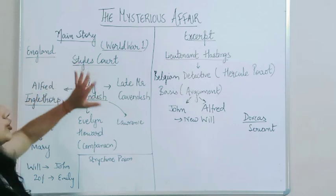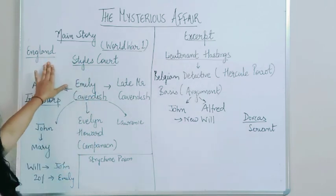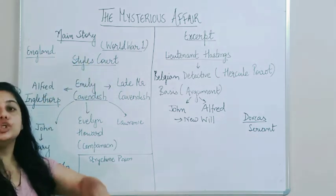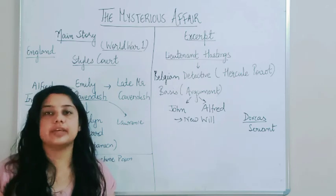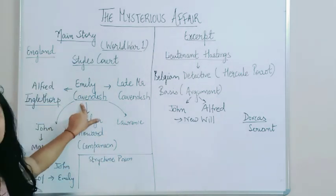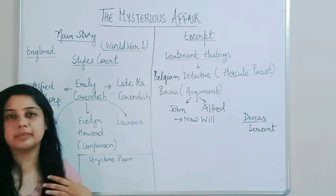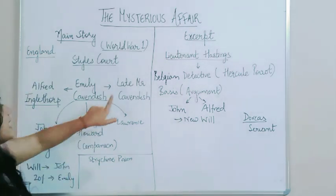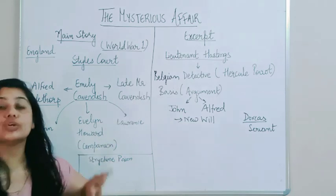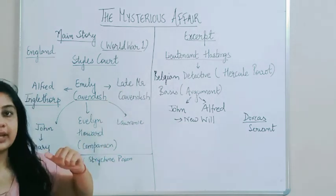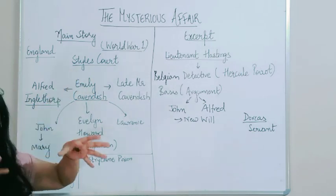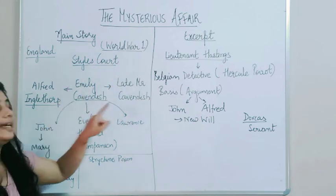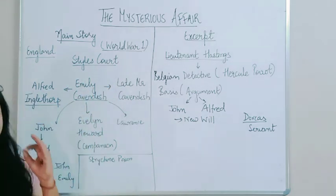The story is about a city in England. It takes place at Styles Court, which is a huge building where people live. One key person is Emily Cavendish - she is an elderly widow whose husband, the late Mr. Cavendish, was a very rich and respectable man. After he died, all the money and property was transferred to Emily, and Styles Court is a property of the Cavendish family which was transferred to Emily after his death.